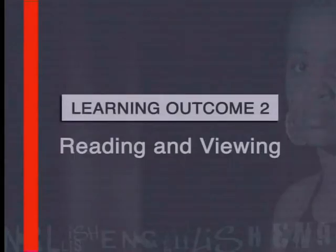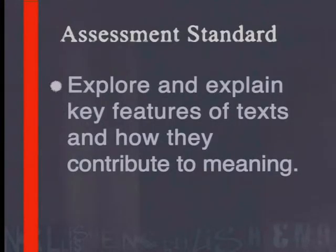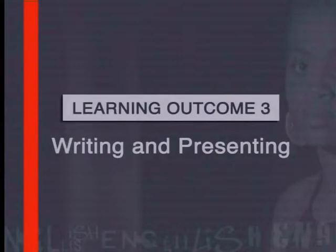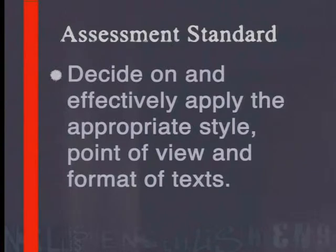The following lesson is linked to Learning Outcome 2, Reading and Viewing, and addresses the assessment standard that requires learners to explore and explain key features of texts and how they contribute to meaning. This lesson also links to Learning Outcome 3, Writing and Presenting, an assessment standard that requires learners to decide on and effectively apply the appropriate style, point of view and format of texts.